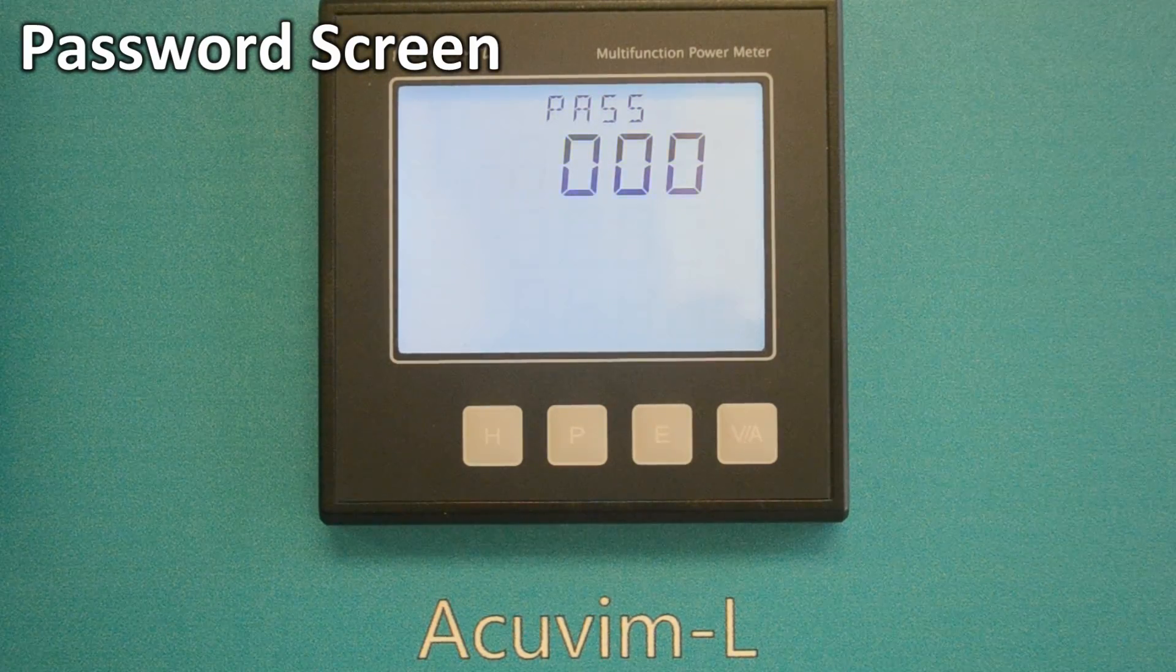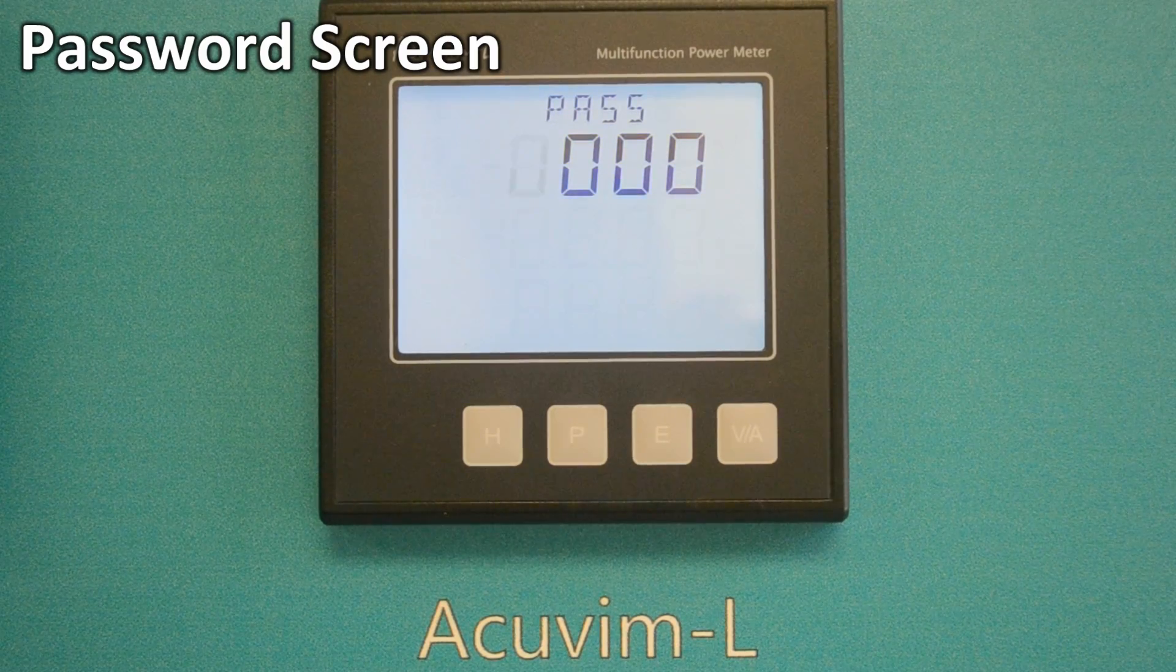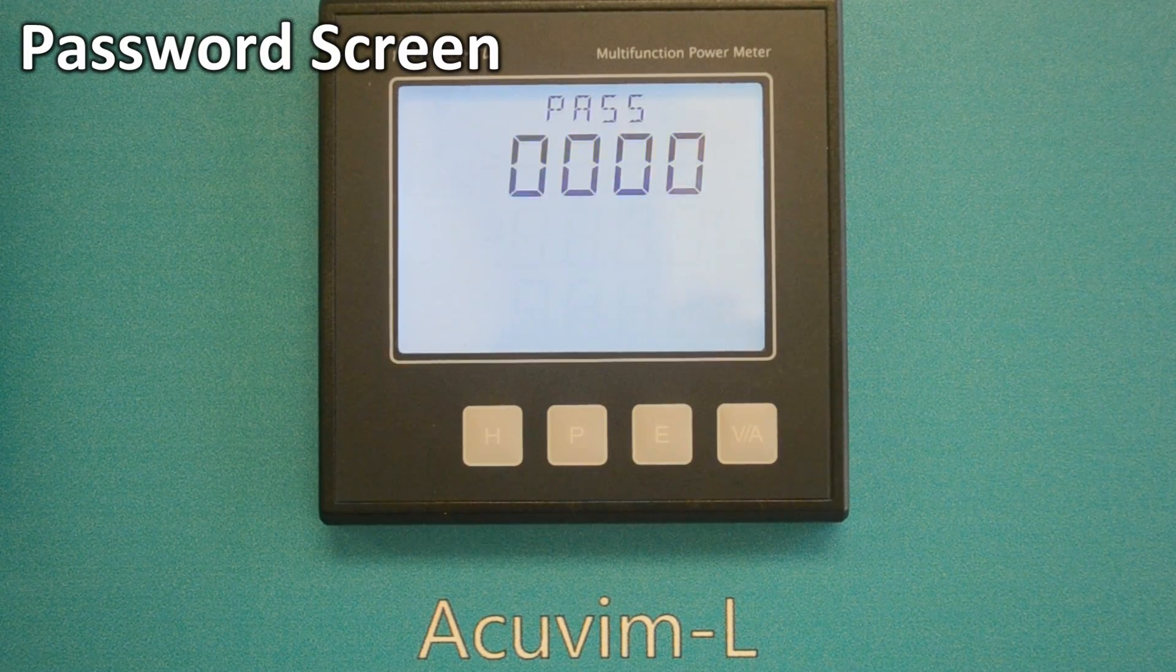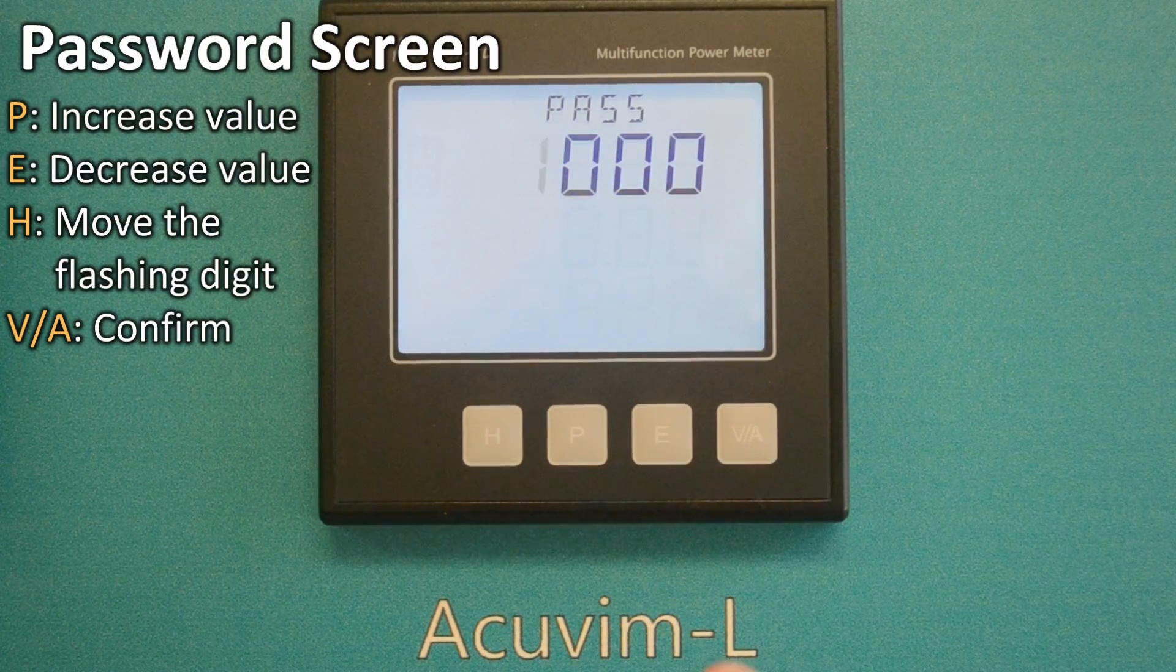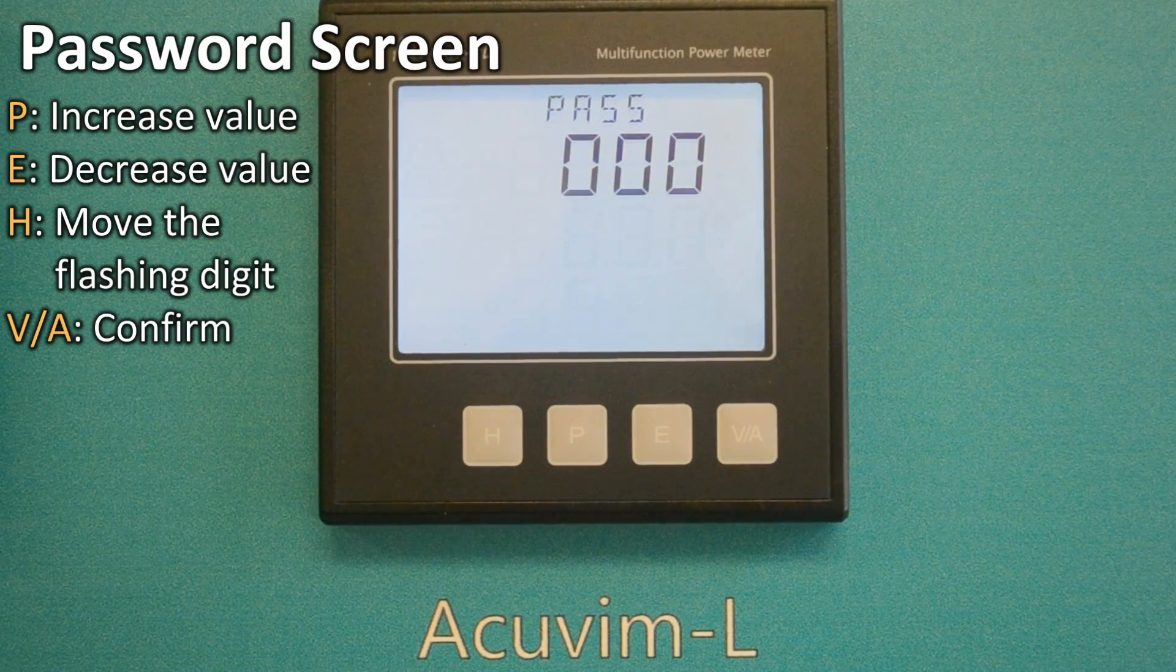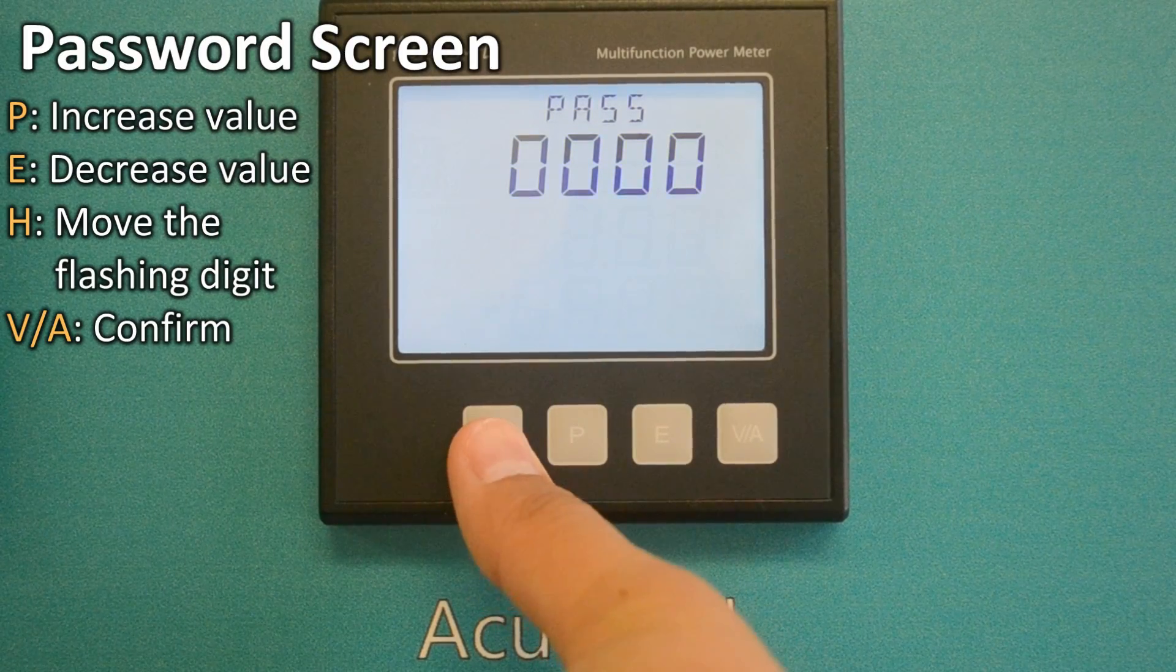It then jumps to a password screen. You are now able to enter the password by pressing the P key to increase the value, the E key to decrease the value, or the H key to move the flashing digit.